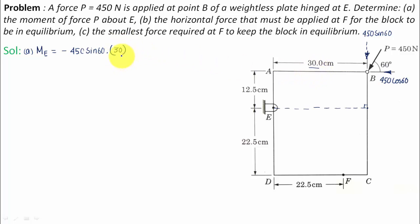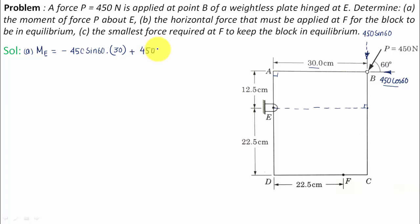One force is still left: 450 cos 60. Keep your thumb at E and move your baby finger along this direction — it produces an anticlockwise turning moment. Dropping a perpendicular from E gives distance EA, so we add positive 450 cos 60 multiplied by 12.5. Putting this into a calculator gives a result of negative 8878.74 Newton-centimeters for the moment.